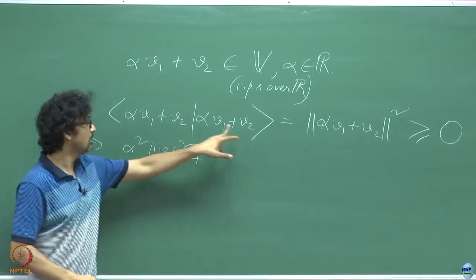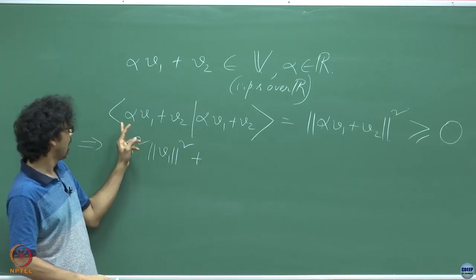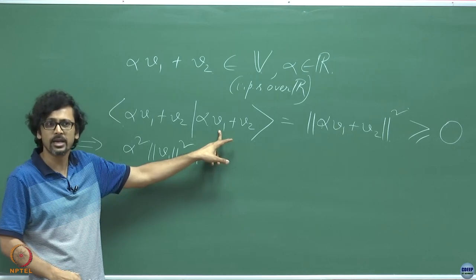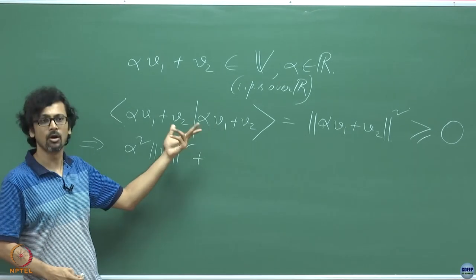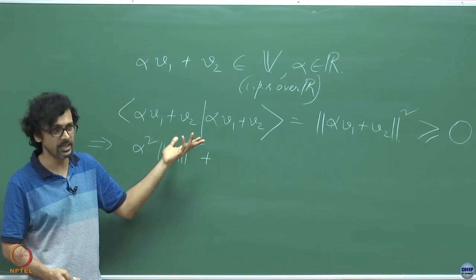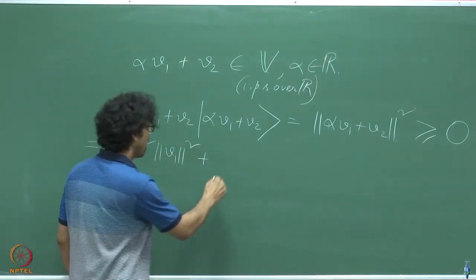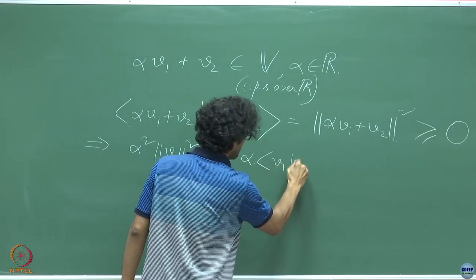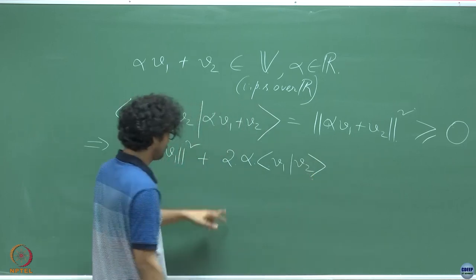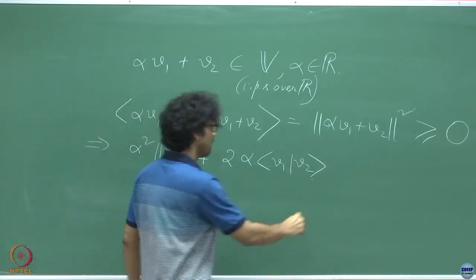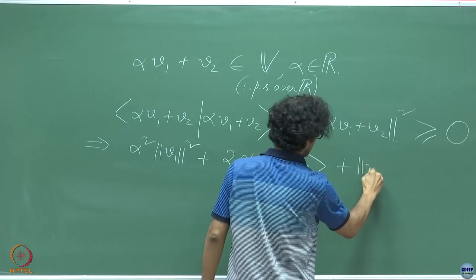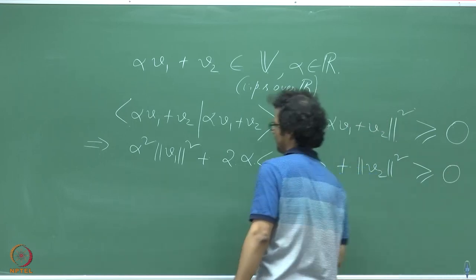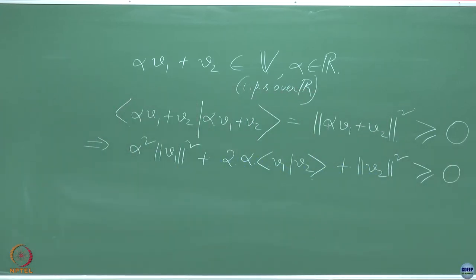Alpha V1, V2 inner and V2 inner with alpha V1, they're one and the same because you can flip the order now and the conjugation has no meaning because it's real. So what we have is twice alpha V1, V2 plus norm of V2 squared.